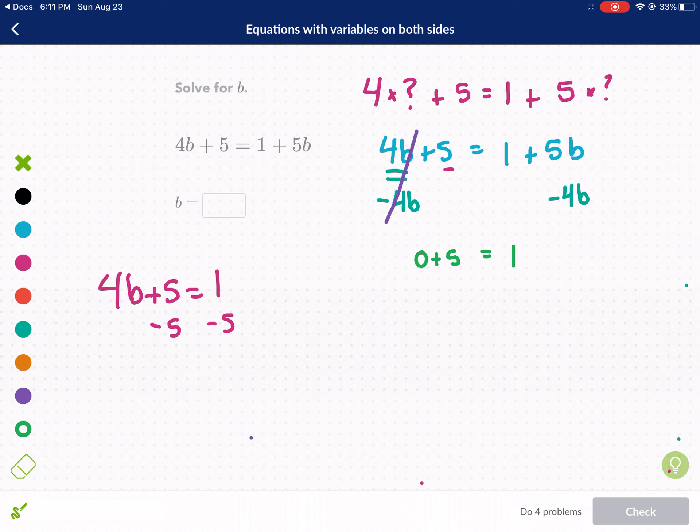And then we have 1 plus what is 5b minus 4b? 5b minus 4b gives us 1b. So we have 0 plus 5 equals 1 plus 1b. We can simplify this a little bit. So I have 5 equals 1 plus 1 times b is just b. So I can just write b.